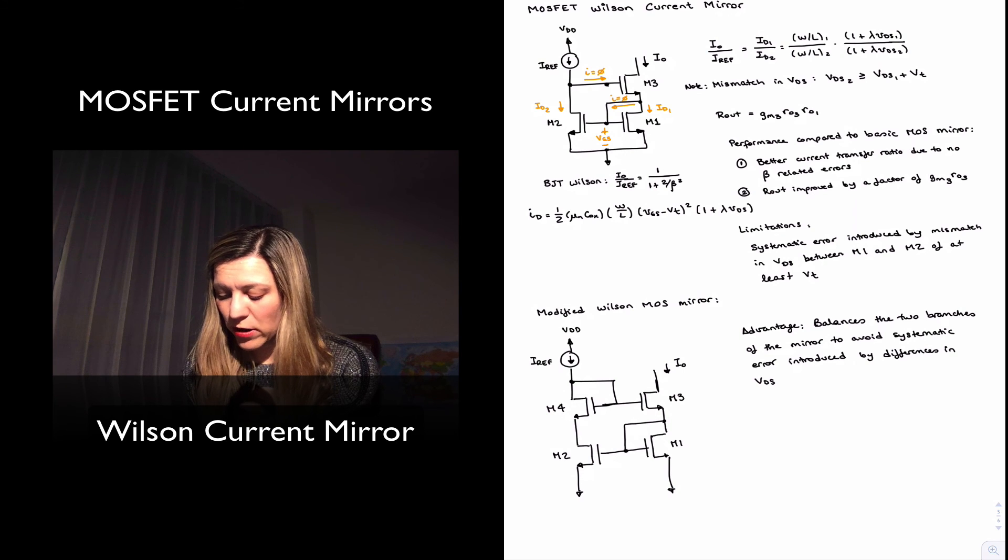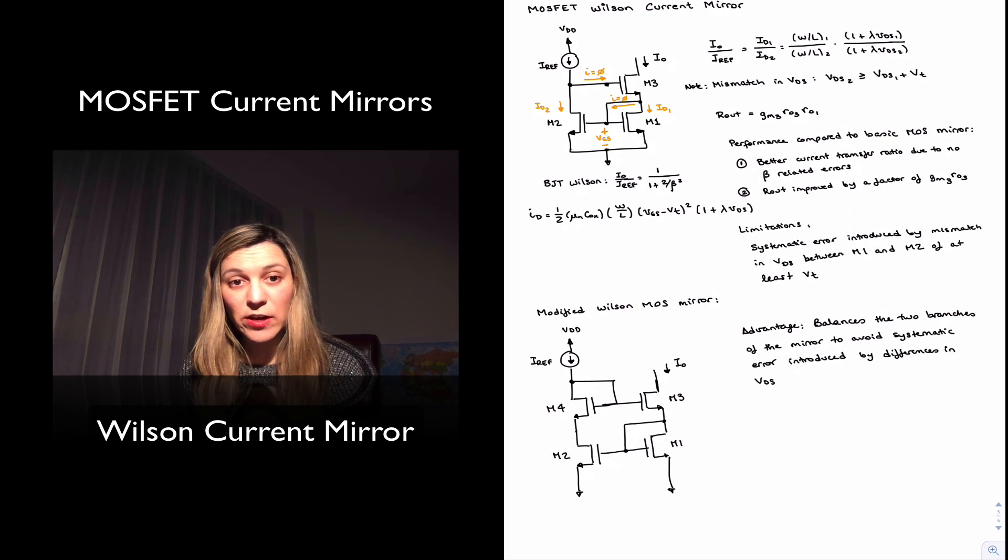Notice that in this case, the drain of M2 is not connected to the gate of M3, and so there is no need for that delta in VDS. These two transistors, now M1 and M2, can see the same VDS value, and the circuit can still be operating as intended. And so that's it for the Wilson current mirror.